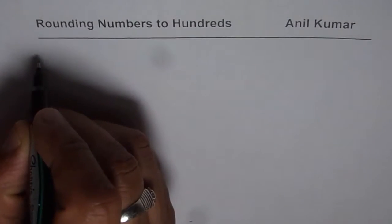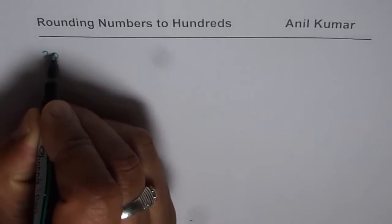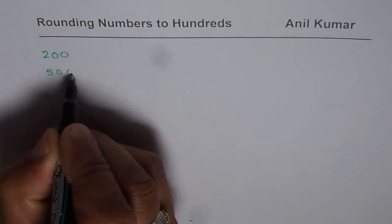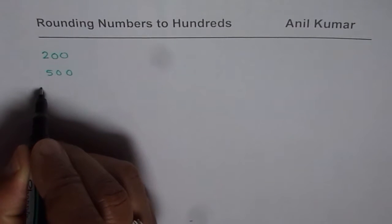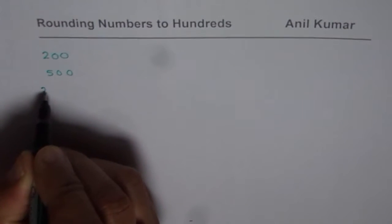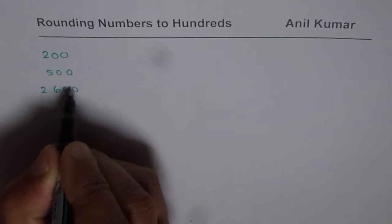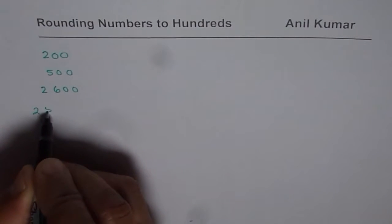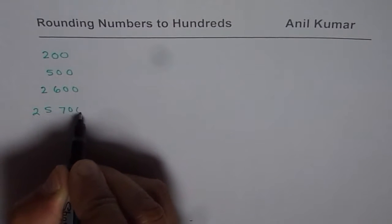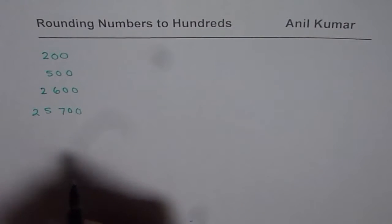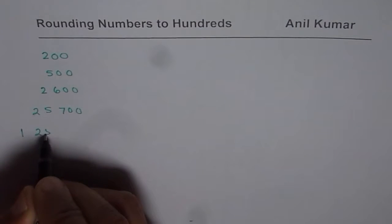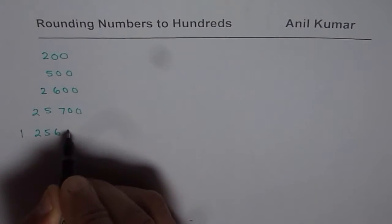You get some numbers like 200. You may get numbers like 500. You may get bigger numbers like 2600. You may get 25,700.